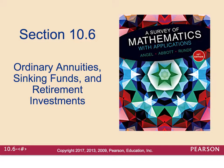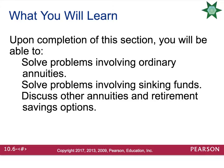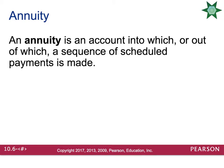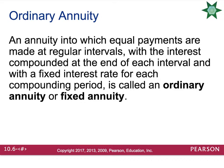Section 10.6 is going to talk about ordinary annuities, sinking funds, and other retirement investments. An annuity is an account into which or out of which a sequence of scheduled payments is made. An annuity into which equal payments are made at regular intervals, with the interest compounded at the end of each interval and with a fixed interest rate for each compounding period, is called an ordinary annuity or a fixed annuity.